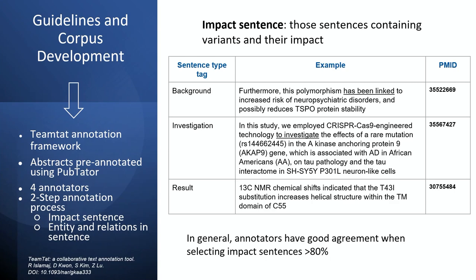We are creating guidelines for a corpus because we are going to evaluate at a larger scale. We work with curators using the TimTat annotation framework, and we have abstracts pre-annotated with PapTator. We have four annotators — students — which makes training more difficult than with expert curators. We use a two-step annotation process. In the first step, we ask them to highlight every sentence relevant for impact, such as sentences containing a variant mention and the impact of that variant. We also ask them to classify sentences as background, previous knowledge, investigation, or result. Students did really well at this activity, with more than 80% agreement.